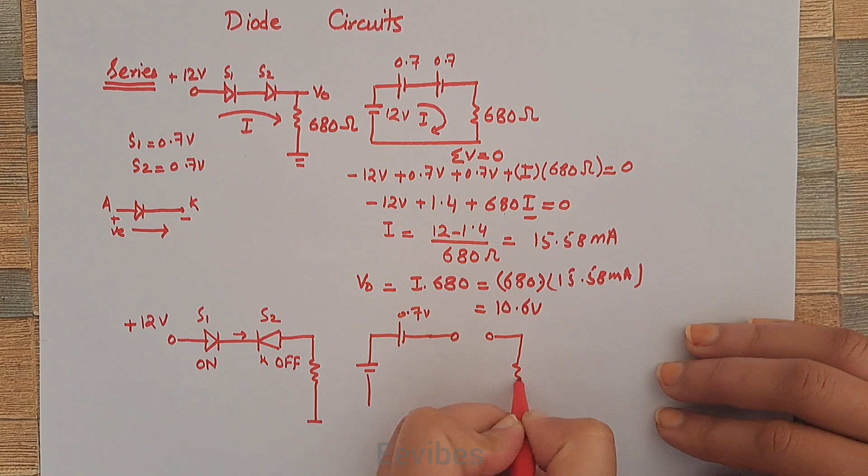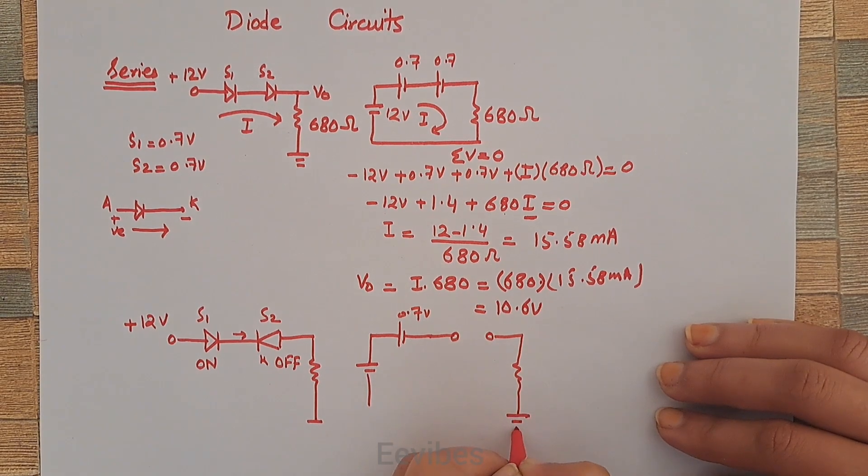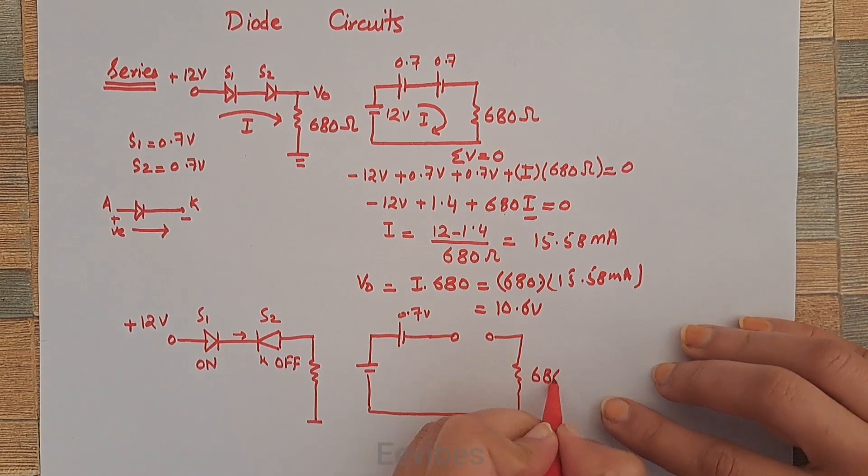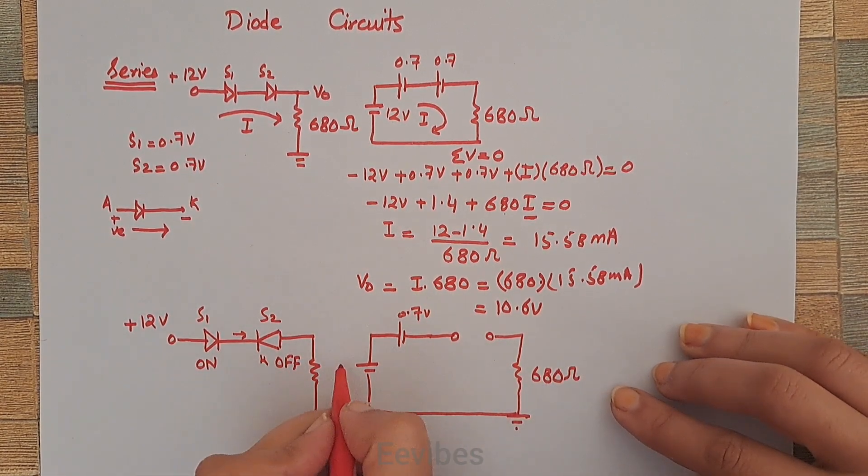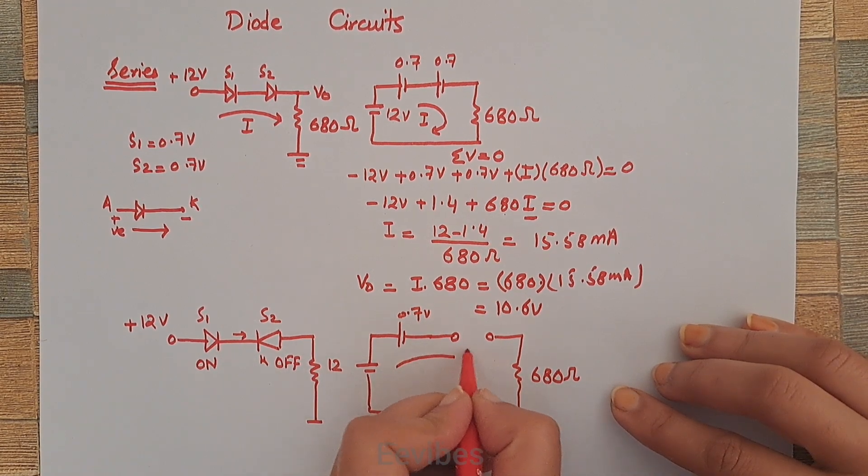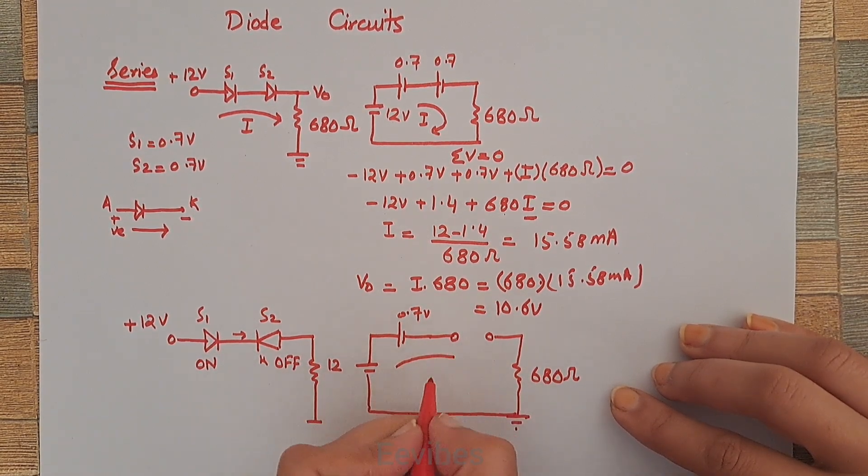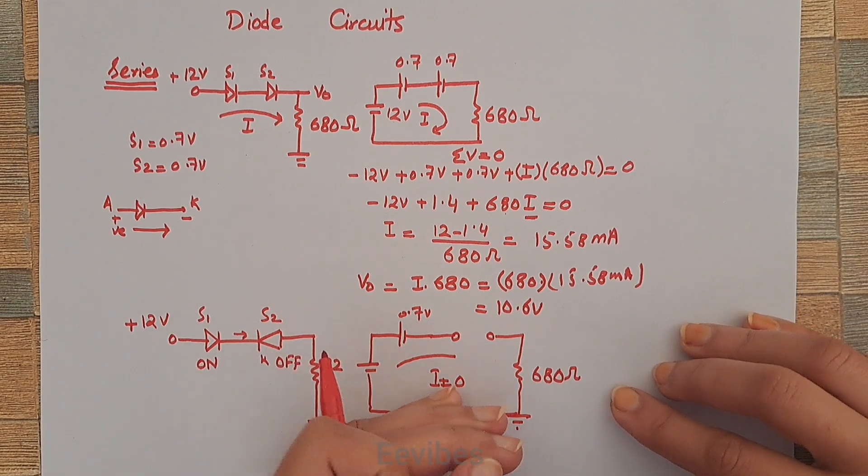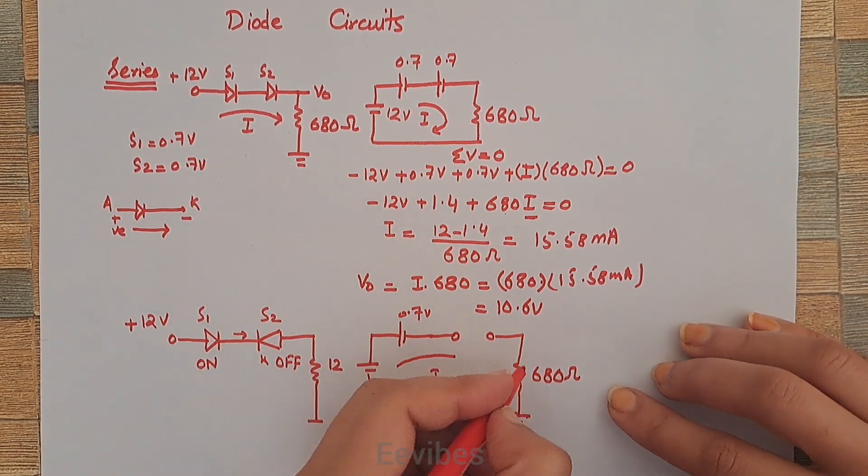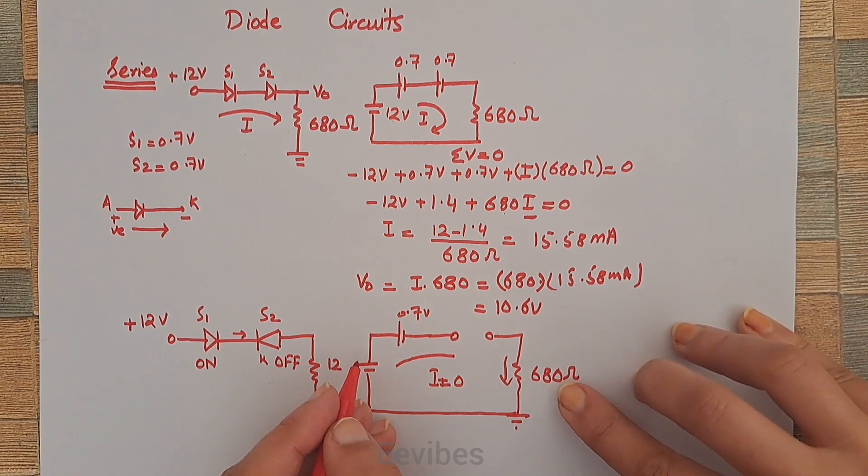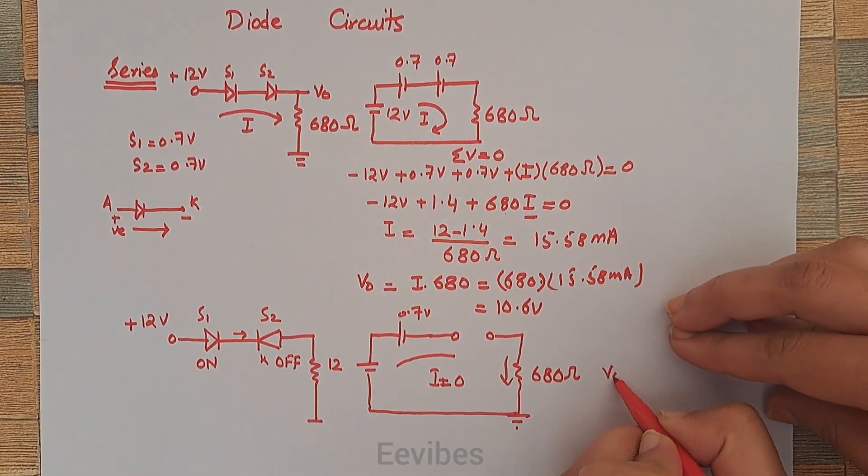The rest of the circuit parameter, which is the resistor, will remain at its place. But this time it can be noticed that the current path is not completed. There is a breakdown, so in this particular case I equals zero. There will be no conduction current, and hence no voltage drop across the 680 ohm resistor. That's why Vout equals zero in this case.